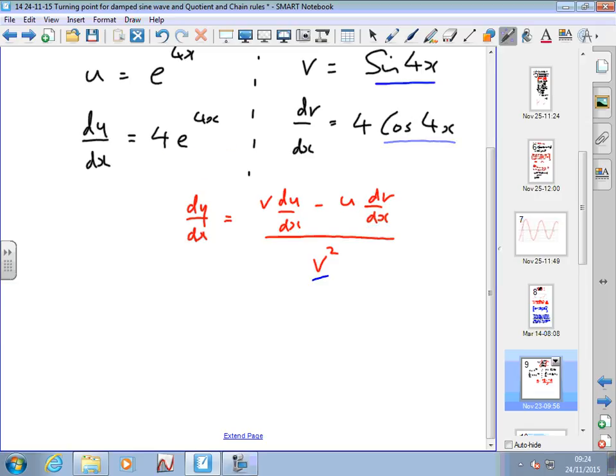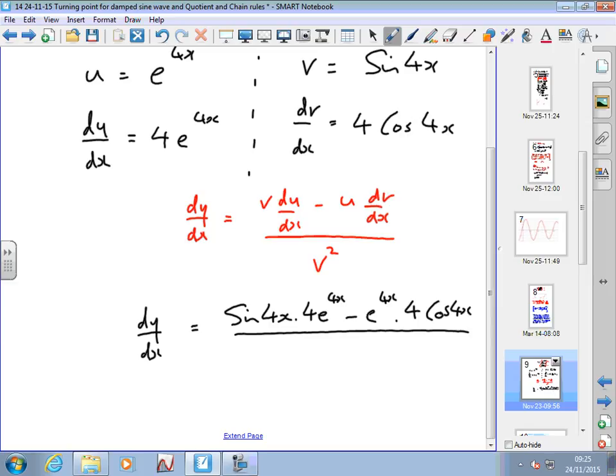I give myself room to do it. What's dy/dx? It's sine 4x times du/dx, which is 4 e to the 4x, minus u, which is e to the 4x, times dv/dx, which is 4 cos 4x, all over v squared, which is sine squared 4x. I just write down what v is and square it.